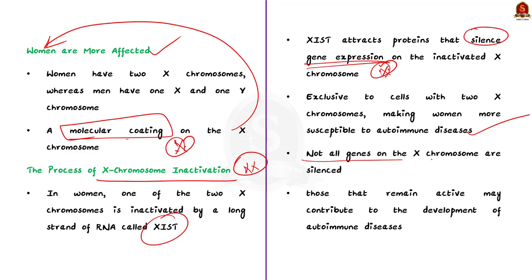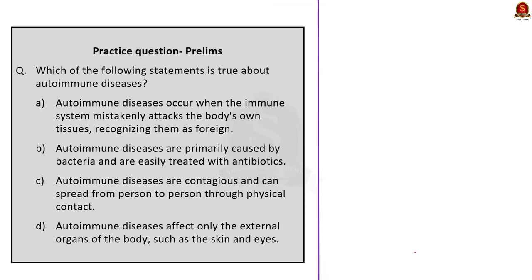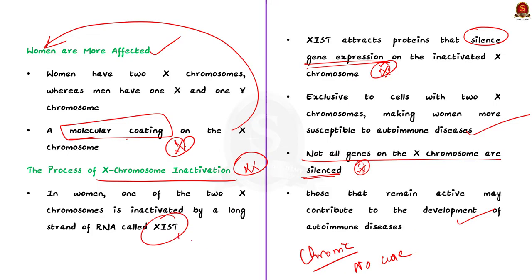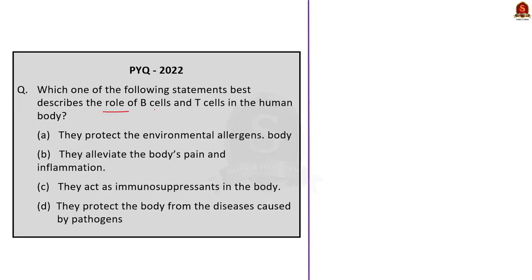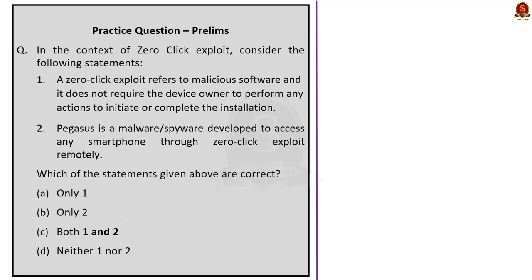In conclusion, the presence of two X chromosomes and the behavior of XIST RNA in women makes them more prone to autoimmune diseases. Which of the following statements is true about autoimmune disease? The answer is option A: autoimmune diseases occur when the immune system mistakenly attacks the body's own tissues, recognizing them as foreign. In a previous year question about the role of B cells and T cells, the answer is option D: they protect the body from disease caused by pathogens.